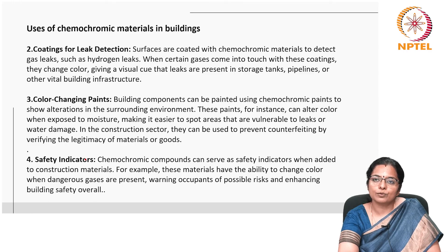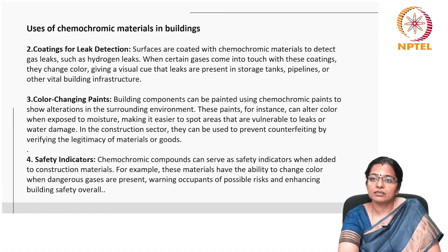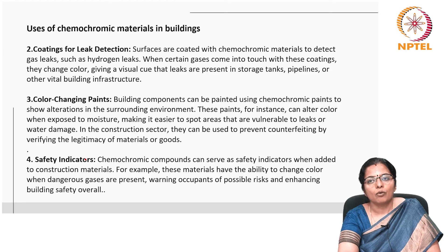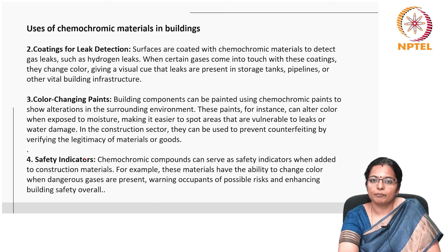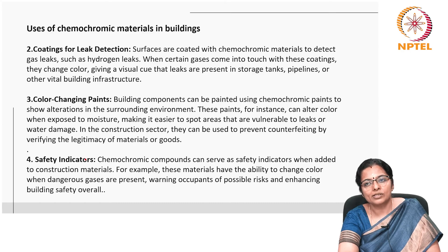The fourth use is safety indicators. Chemochromic compounds can serve as safety indicators when added to construction materials — for example, these materials have the ability to change color when dangerous gases are present, warning occupants of possible risks and enhancing building safety overall.